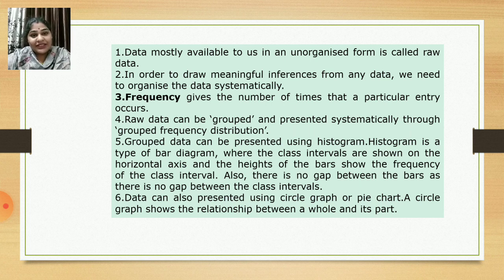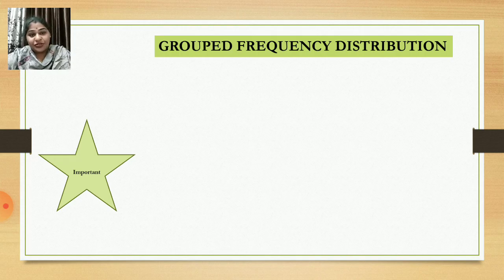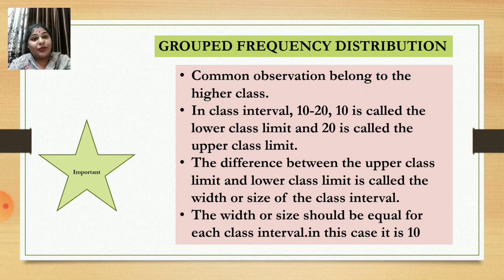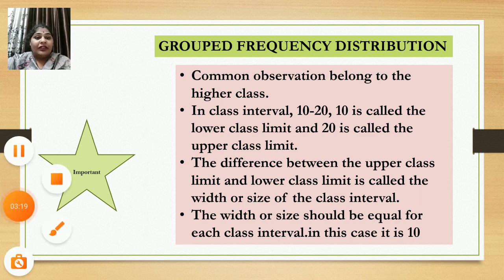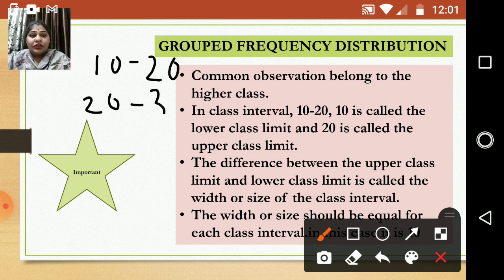So one by one let's revise the important topics. The first one we are going to see today is grouped frequency distribution — how to arrange data in a frequency distribution table. The class intervals are, for example, 10 to 20, 20 to 30, 30 to 40, and so on.